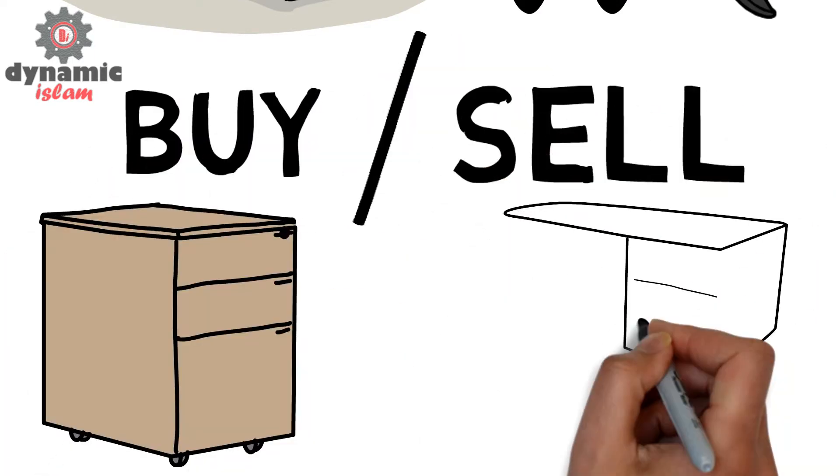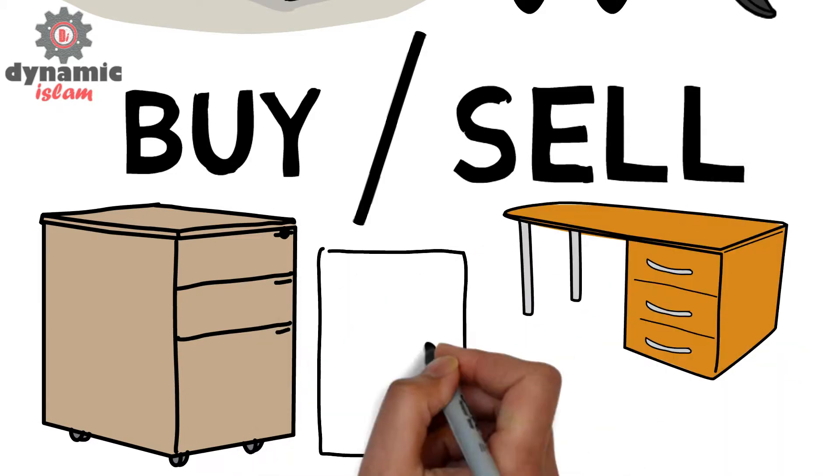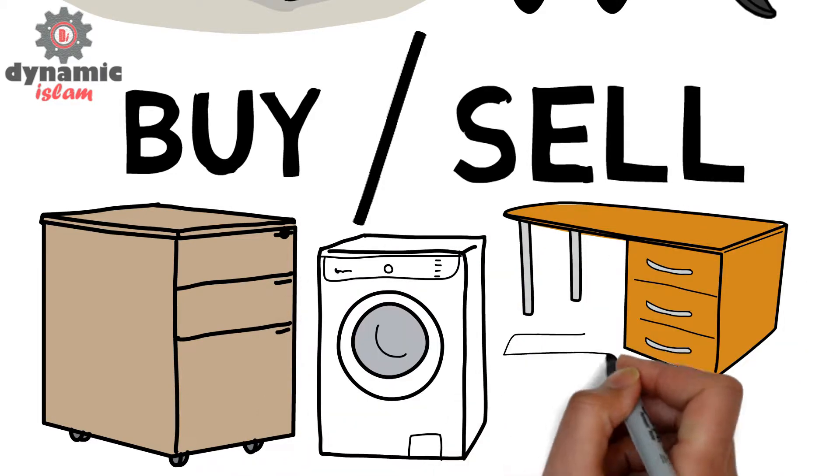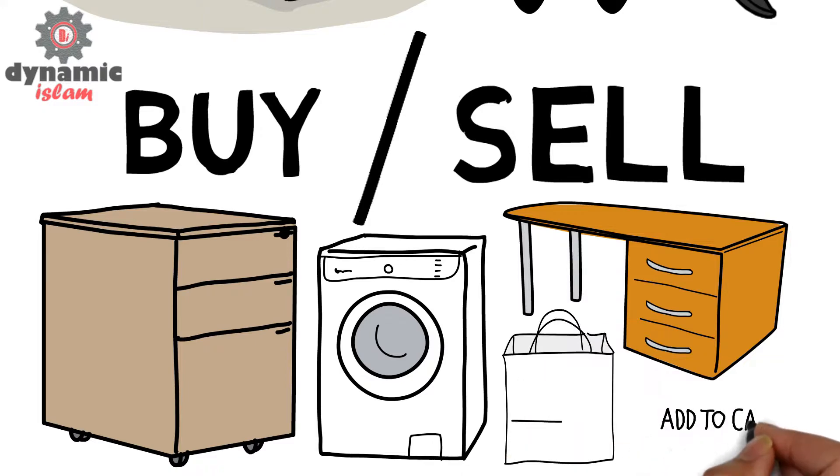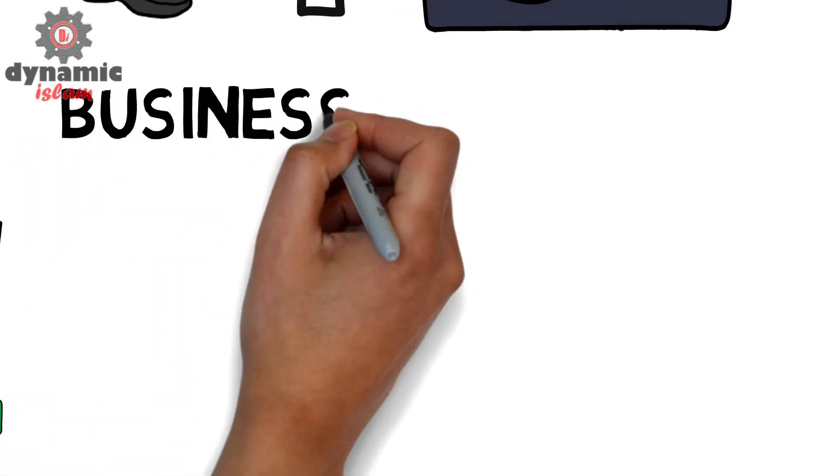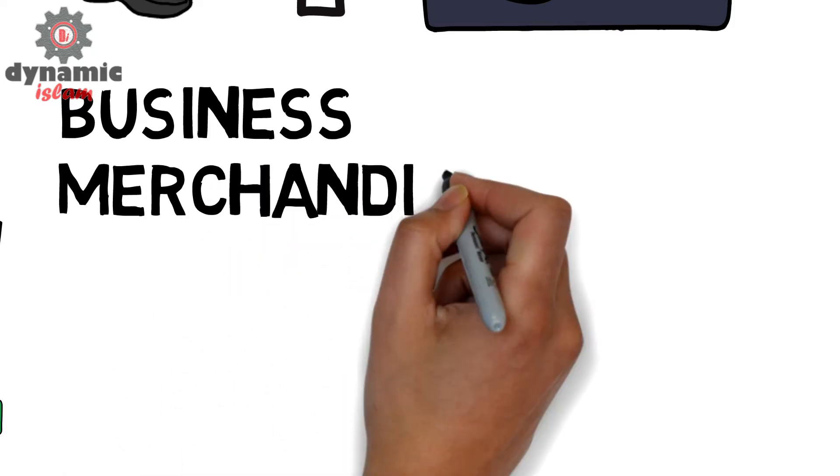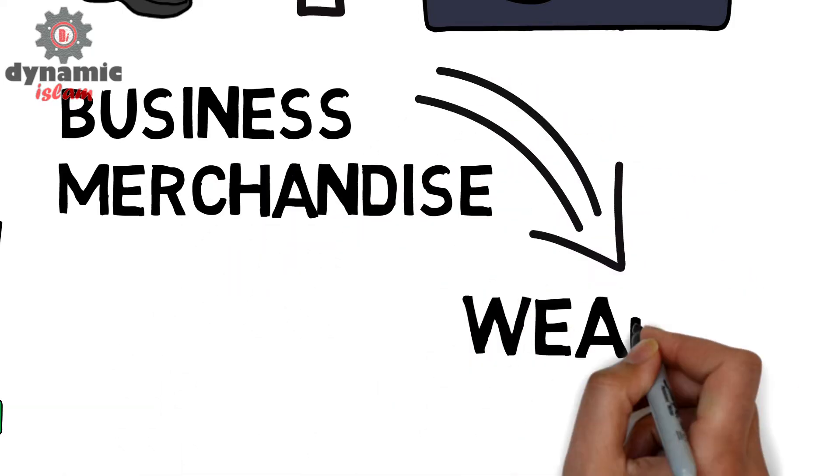And the broadest category is the category of business merchandise. So there are people who buy and sell goods, they buy and sell furniture, they buy and sell properties. Each one of these is a type of, in the Sharia, we call it business merchandise. And all of these merchandise, it comes under wealth.